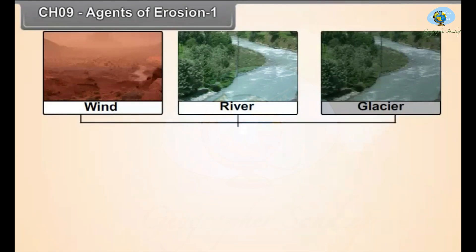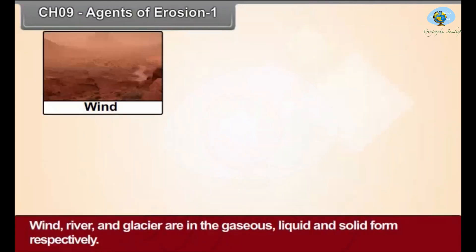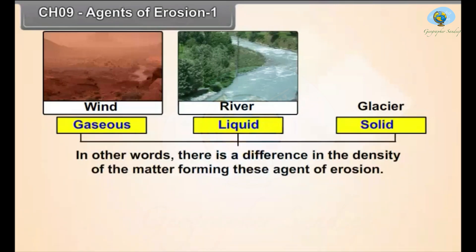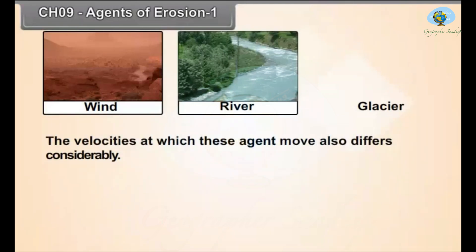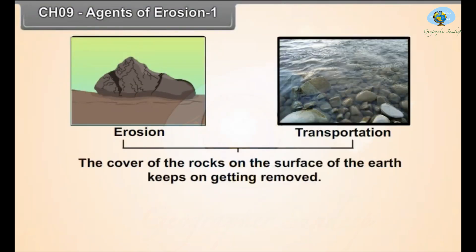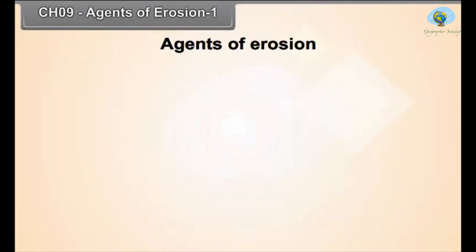The work of wind, river, and glacier is controlled by the climate of the region, while sea waves and groundwater work wherever they exist. Wind, river, and glacier are in the gaseous, liquid, and solid state respectively, so there is a difference in density. Their velocities also differ considerably, hence their ability to work differs. As a result, we find differences in the landforms produced through erosion and transportation. Since the rock cover on the surface keeps getting removed, these processes are together called processes of denudation.